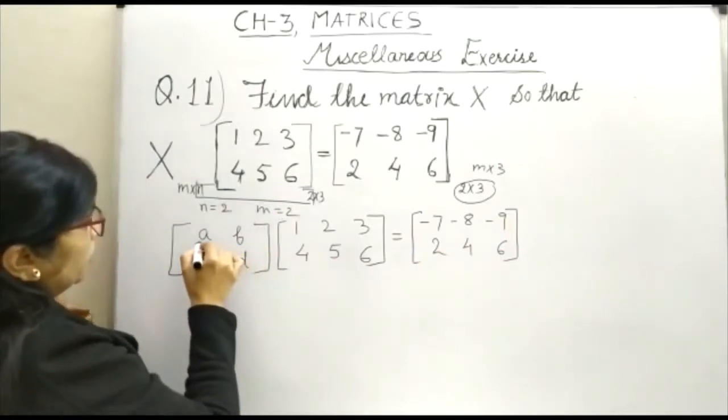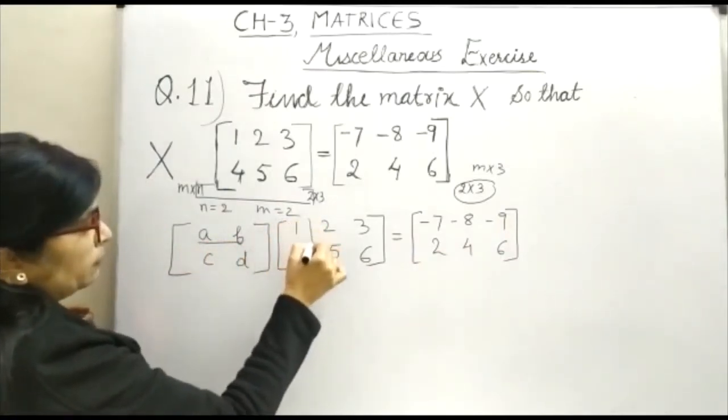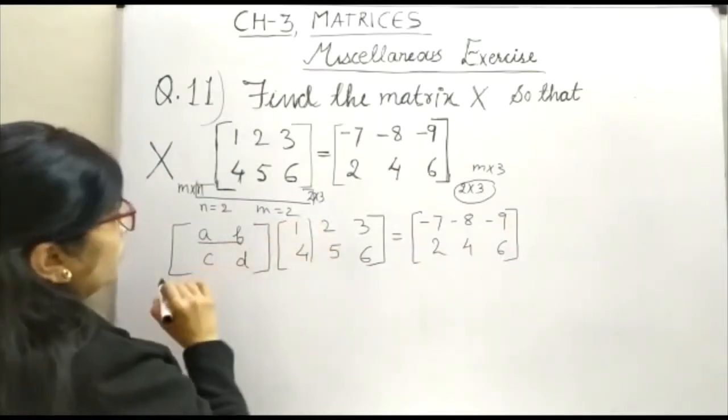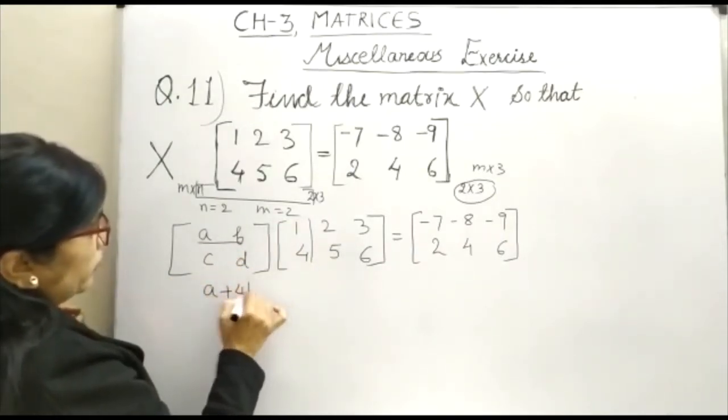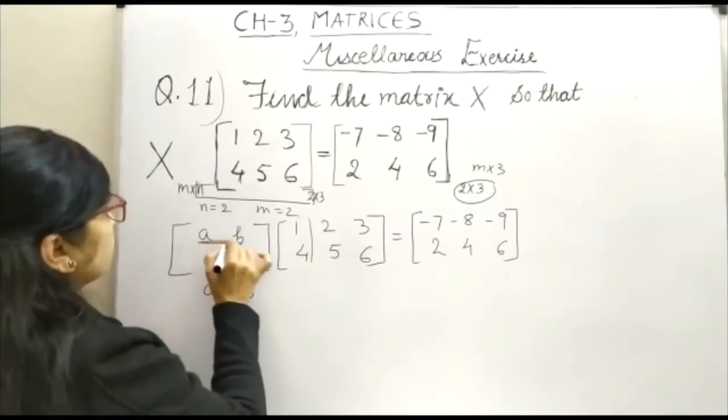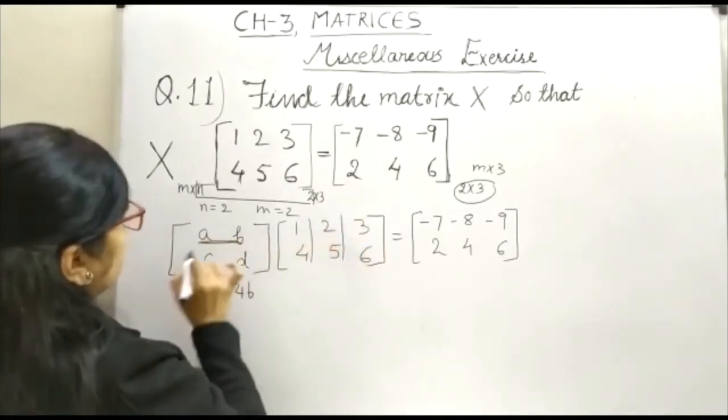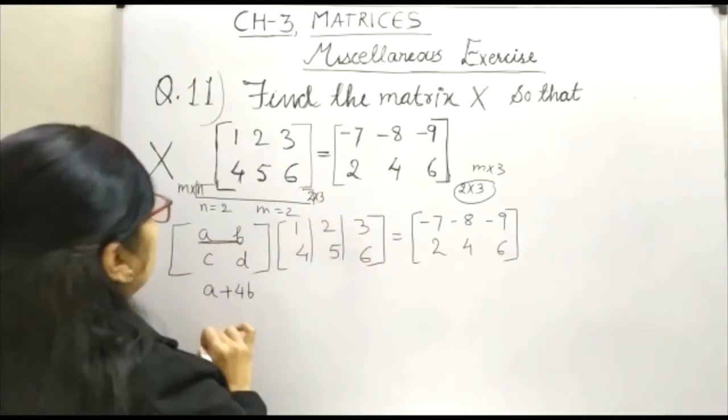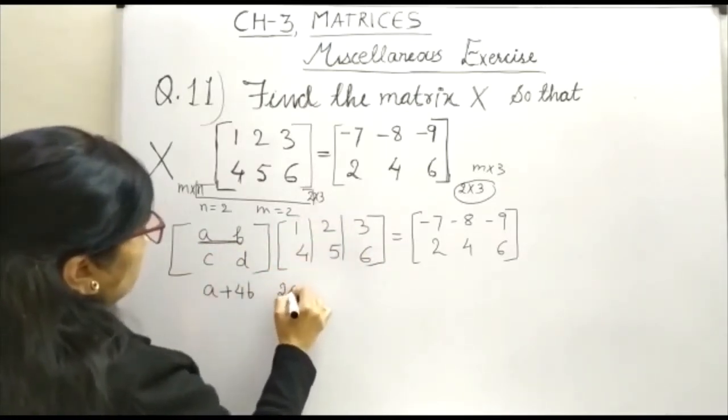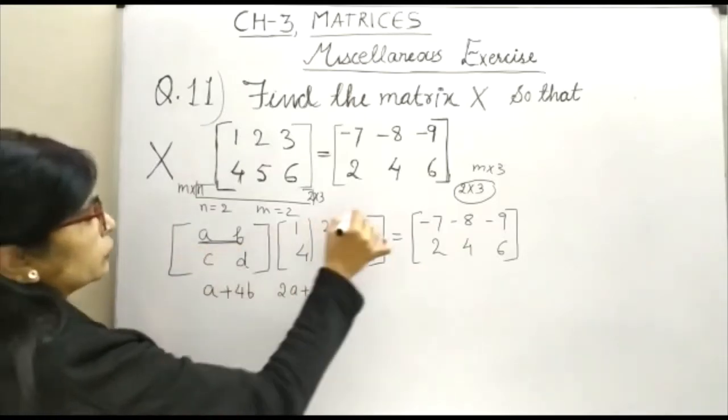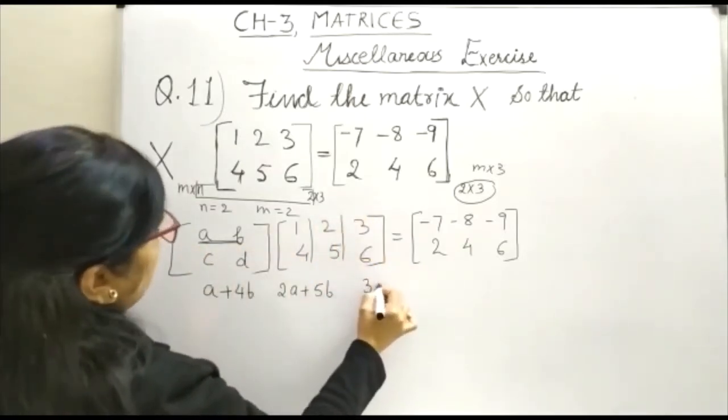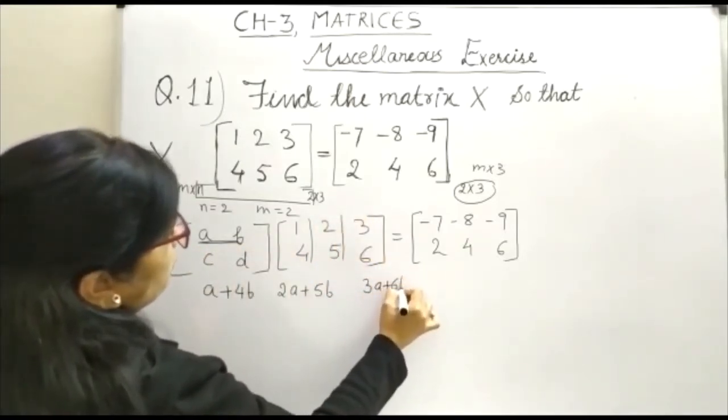Now, let us multiply. You know, this term will be multiplied with this term. So you will be getting A plus 4B. Now again, this term will be multiplied with this first row, second column. So it is 2A plus 5B, then first row, third column, that is 3A plus 6B.